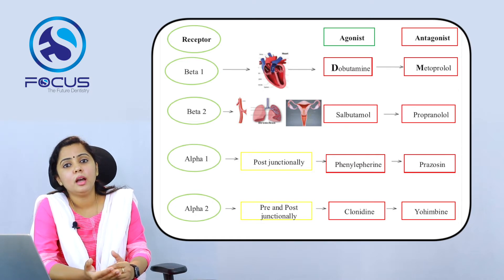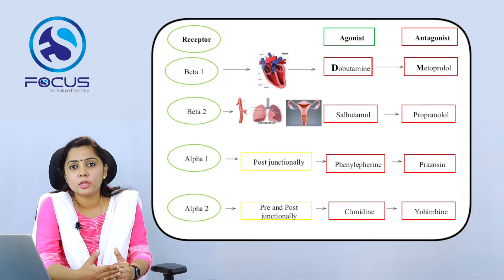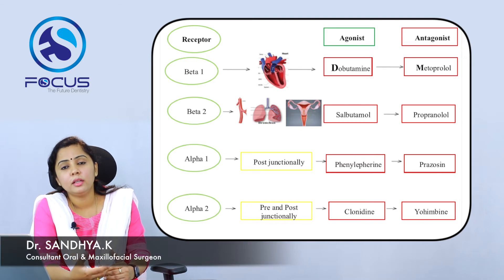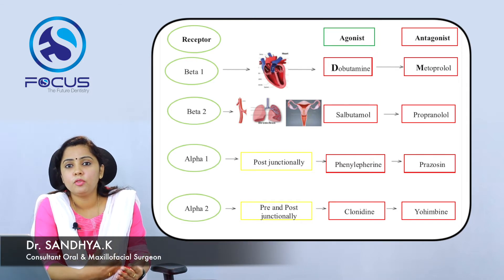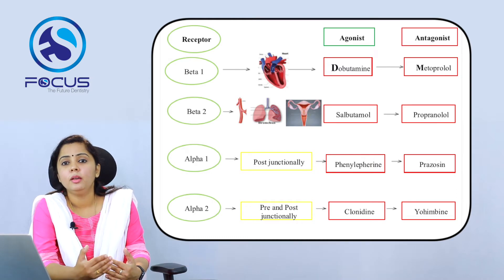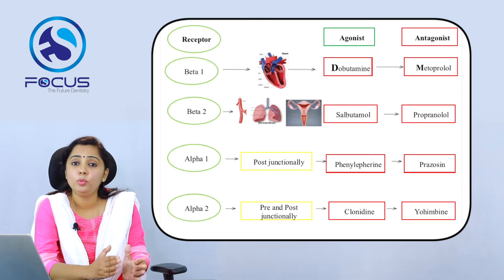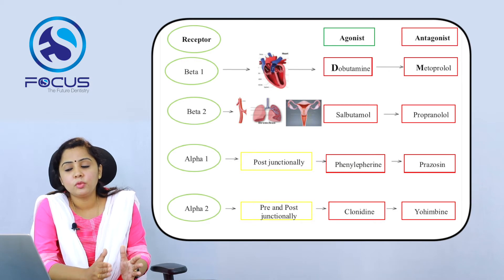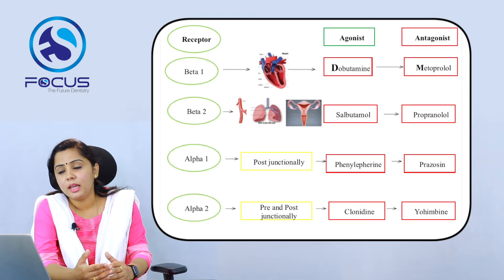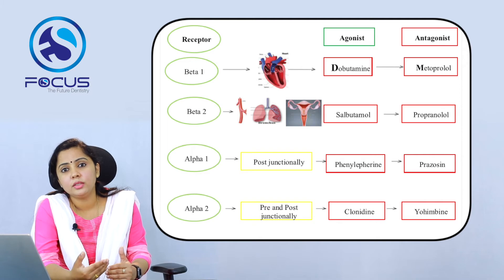The beta-1 receptor is present in the heart. The agonist for the beta-1 receptor is dobutamine and the antagonist is metoprolol. The beta-2 receptors are present in the vessels, bronchus, and uterus — the agonist is salbutamol and the antagonist is propranolol. Alpha receptors are mainly concerned with vasoconstriction. Alpha-1 receptors are present post-junctionally, whereas alpha-2 receptors are present both pre- and post-junctionally. The agonist for alpha-1 is phenylephrine and the antagonist is prazosin. For alpha-2, the agonist is clonidine and the antagonist is yohimbine.